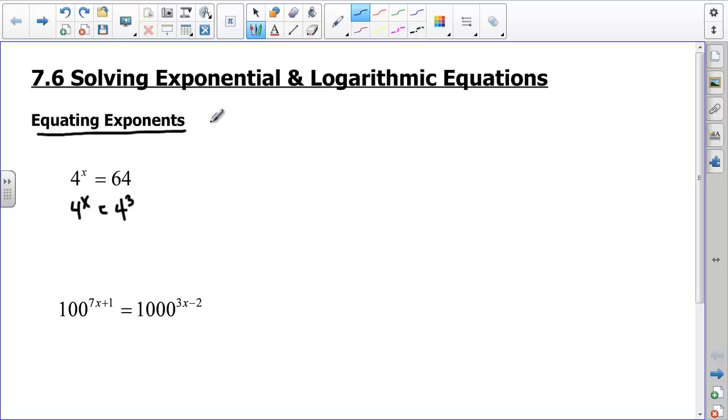Now this is nice because I can say, if 4 to the x equals 4 to the third, what's true about x and 3? We can say that x equals 3, and that's our answer. 4 to the third equals 64. That's a pretty simple equation and a pretty simple solution.